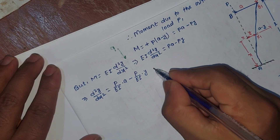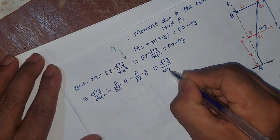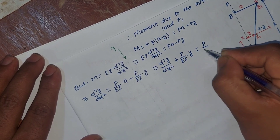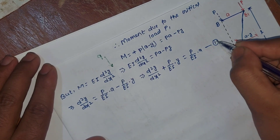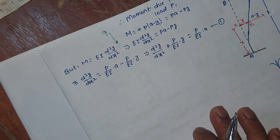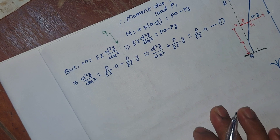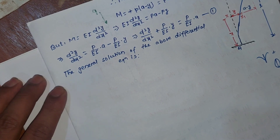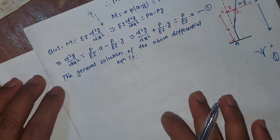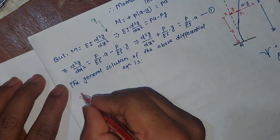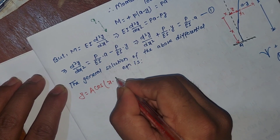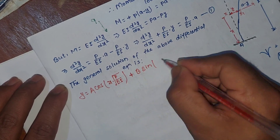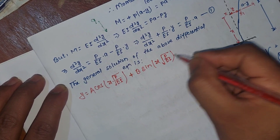Rearranging the differential equation: d²y/dx² plus (P/EI)·y is equal to (P/EI)·a. This is our differential equation. The general solution of the above differential equation is: y is equal to A·cos(x·√(P/EI)) plus B·sin(x·√(P/EI)) plus a.